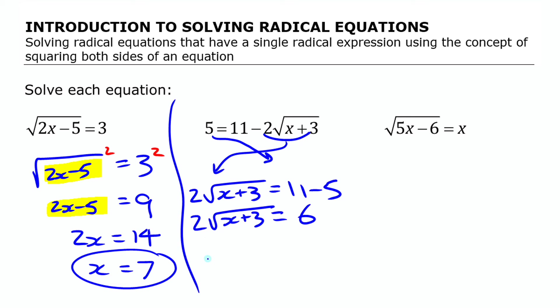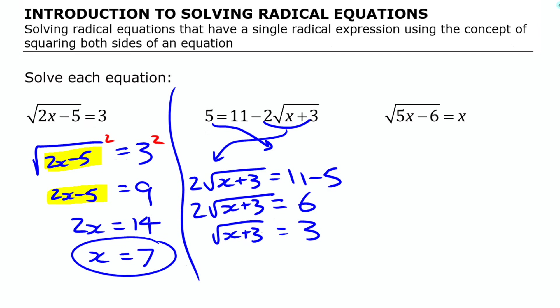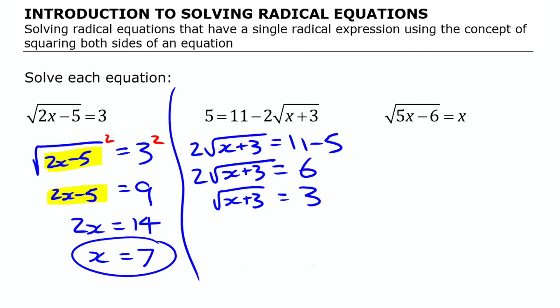If I want to solve that, I notice that 2 times this is 6. I could divide both sides by 2 first, so that square root of x plus 3 is 3. Now that I have square root of x plus 3 equals 3, I can square both sides because I have a single term here and a single term here. Just like the first equation, I'm going to have x plus 3 equals 9, which means x has to be 6.